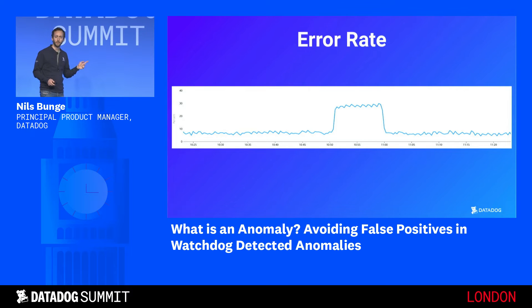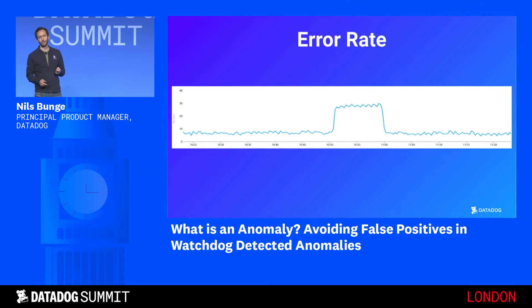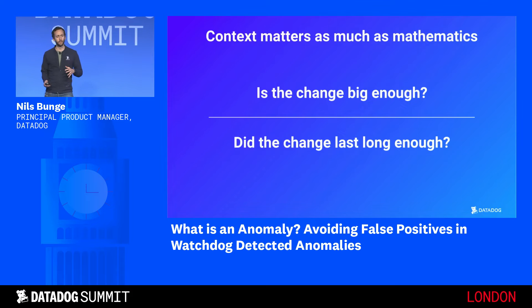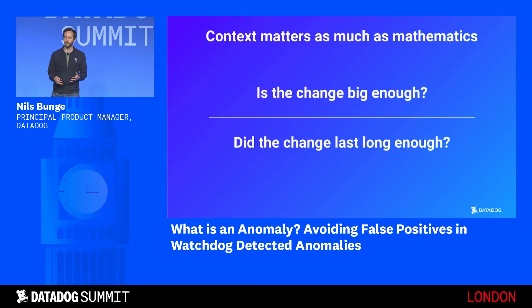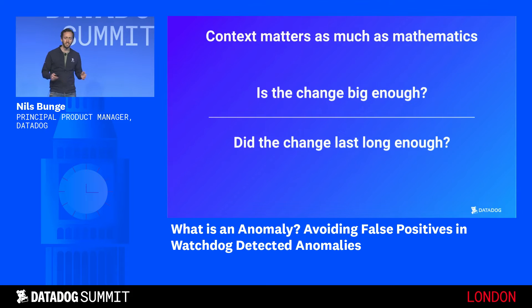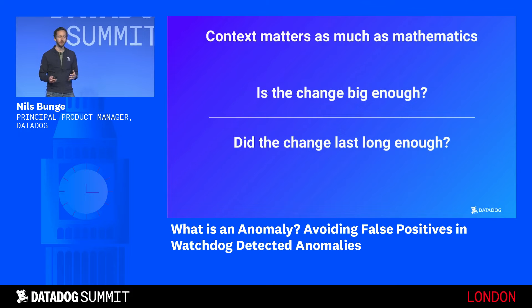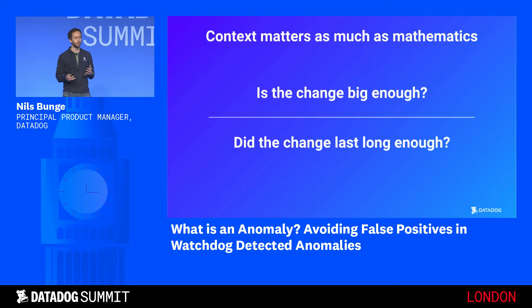But what if it's an error rate for a critical service? Then it's a different story and you would likely start to care. So the first lesson we learned is that we care differently depending on the data we look at. Therefore, it's not just about mathematics and models anymore. It's about knowing what the underlying data represents and adjusting the protections you put in place based on this.